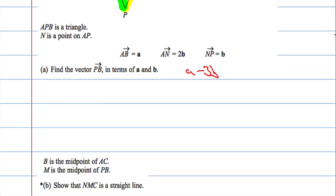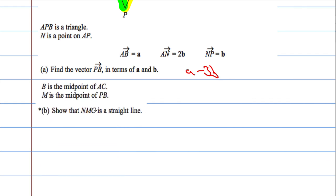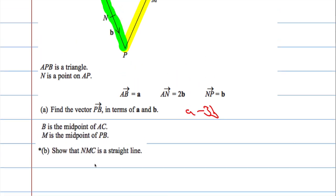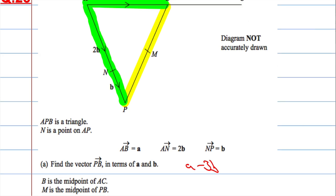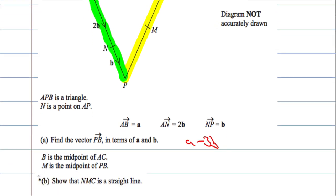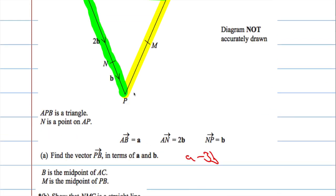Okay, the next part of the question is quite tricky. B is the midpoint of AC, and M is the midpoint of PB. Show that NMC is a straight line. And we've got to show and communicate the answer clearly to the examiner, because we have the asterisks.